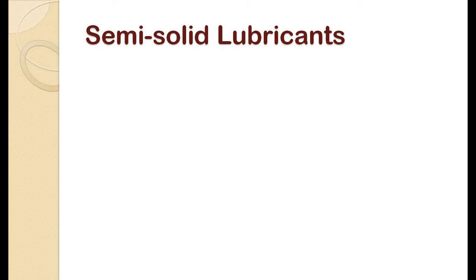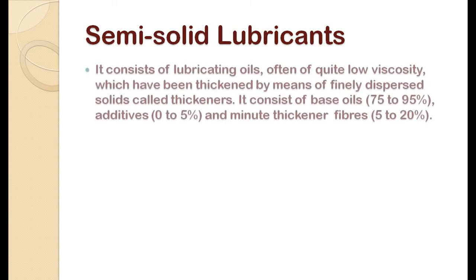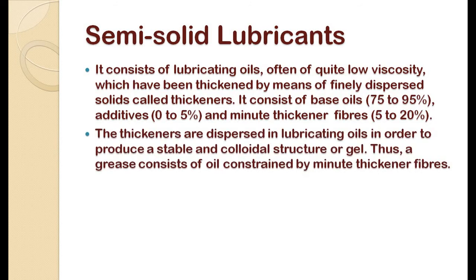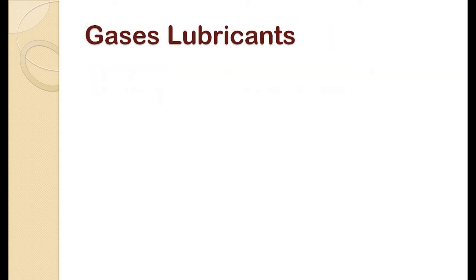Next are semi-solid lubricants, which are an extended type of liquid lubricant. They consist of lubricating oil that has been thickened by means of finely dispersed solids called thickeners. These thickeners are dispersed in lubricating oil to produce a stable colloidal structure or gel. This type of lubricant is used where the system requires a high-viscosity lubricant.